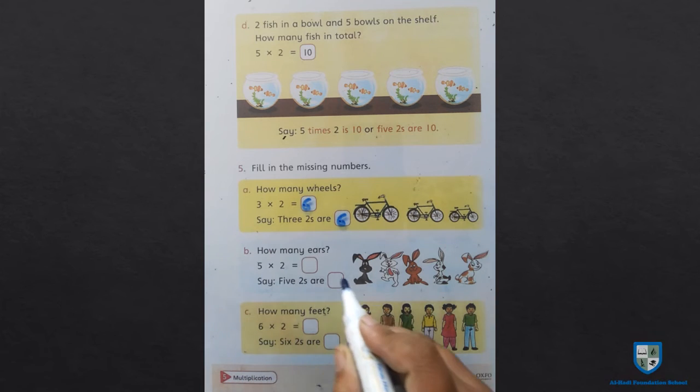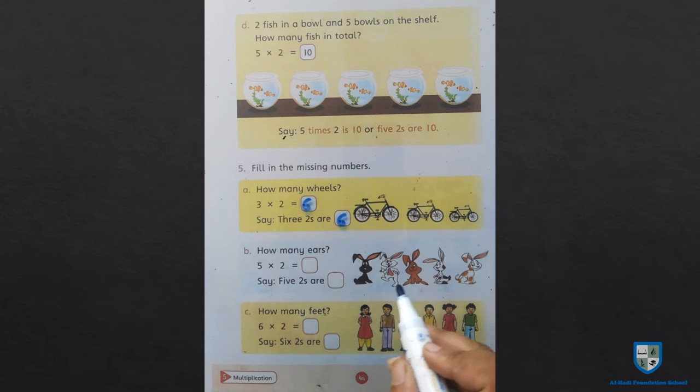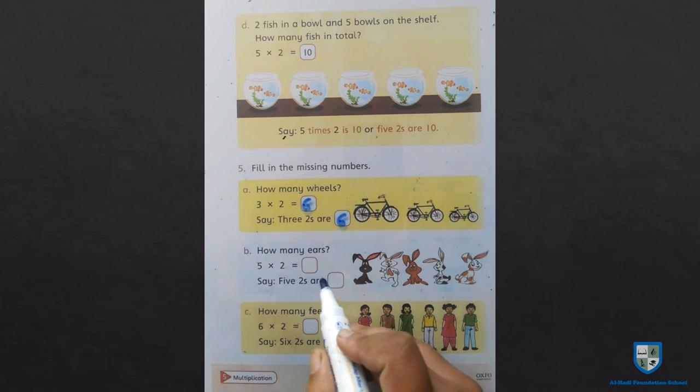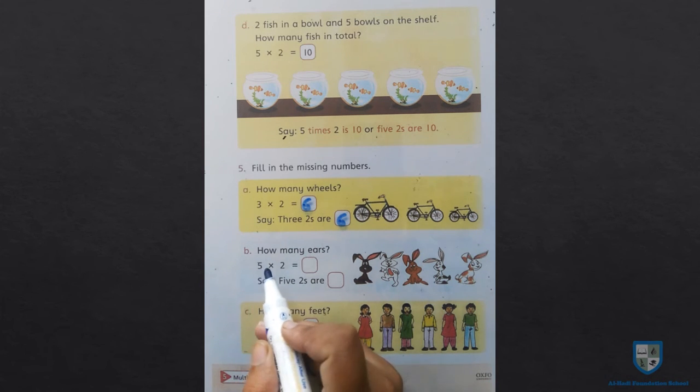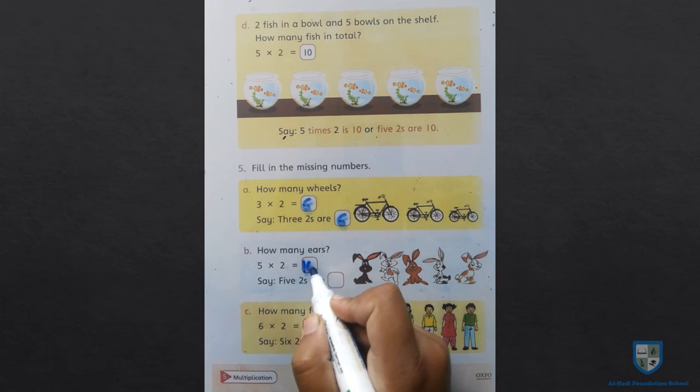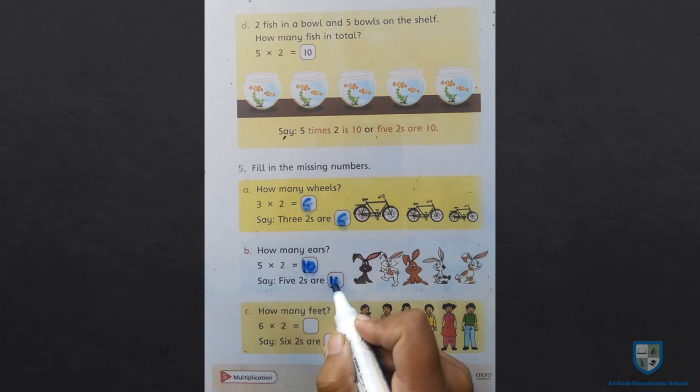Next, how many ears? Now here, 1, 2, 3, 4, 5. 5 rabbits. So we will see how many ears 5 rabbits will have. Each rabbit has 2 ears, and there are 5 rabbits. 5 multiplied by 2 is equal to 10. 5 twos are 10.